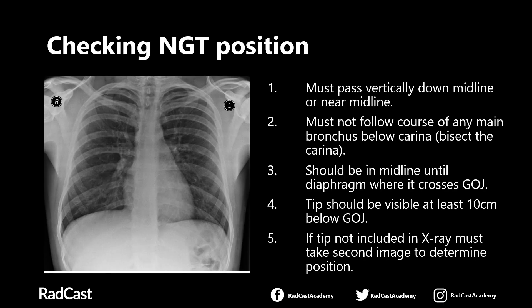In order to stop that from happening, this is the checklist that you want to be going through in your head every time you see a chest x-ray with a nasogastric tube on it, in order to make sure that it's in the right position. You want to go through this checklist and be able to say yes to each point in turn. If you can't say yes to each point, then it probably means that the nasogastric tube is in the wrong place and needs to be resited.